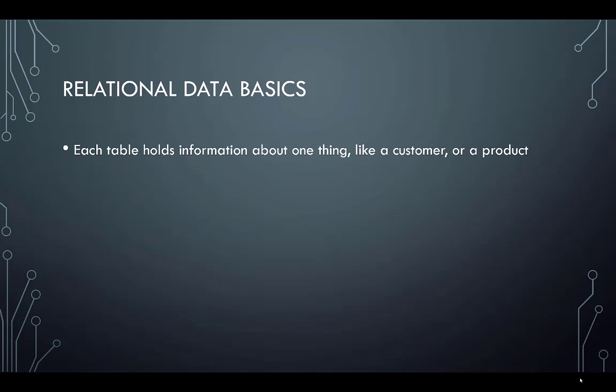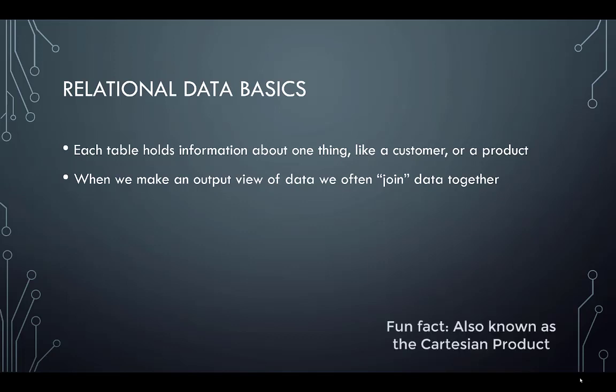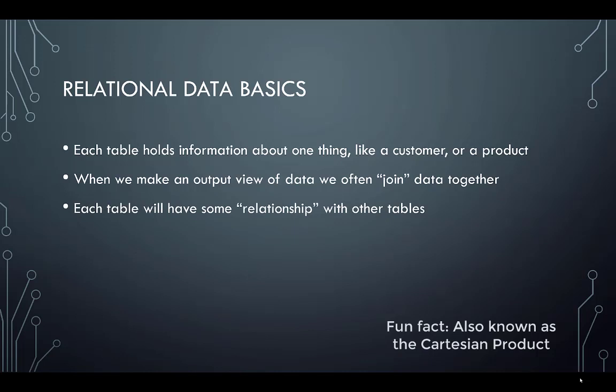In our basics, we know that each table holds information about one thing, like a customer or a product. When we make an output view of that data, we're often joining the data together and creating a product — the output from two or more tables. Each table will have some relationship with other tables, and sometimes it's not obvious what that relationship is.